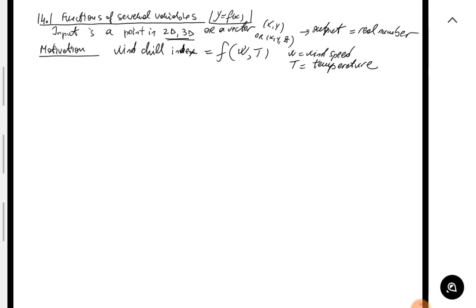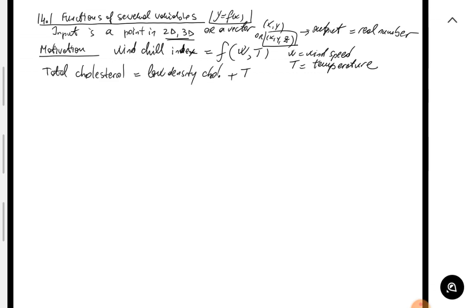Here is an example where you need the input as a point in 3D. The total cholesterol measured in typical lab work is actually a function of three variables. The formula is: low-density cholesterol (LDL) plus the amount of triglyceride divided by five, plus high-density cholesterol (HDL).